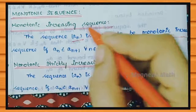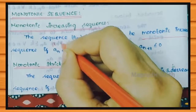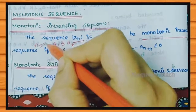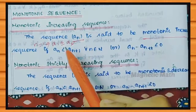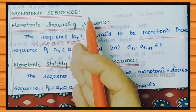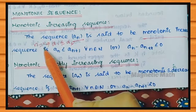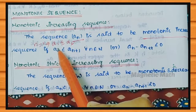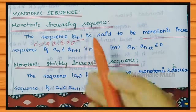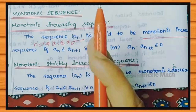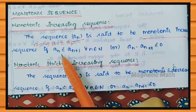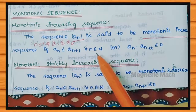So if n equals 1, then A1 is less than or equal to A2. In sequence rule, the first term is less than or equal to the second term: A1 ≤ A2 ≤ A3. For all n belonging to the natural numbers.